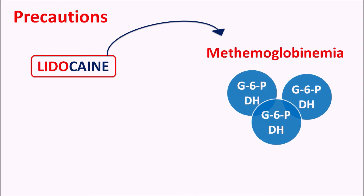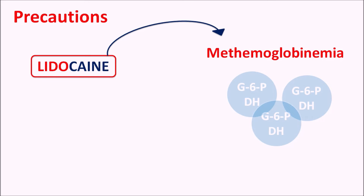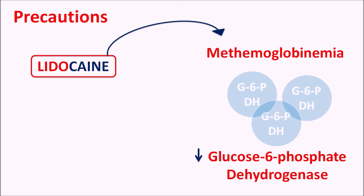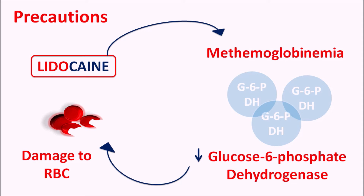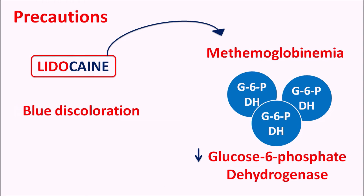Similarly, this drug can produce methemoglobinemia — particularly in patients who have glucose-6-phosphate dehydrogenase (G6PD) deficiency. G6PD is an important enzyme required for production of NADPH. NADPH activates the glutathione system so that it can reduce oxidative stress. In patients with decreased levels of G6PD, oxidative stress is increased resulting in destruction of RBCs. This damage to RBCs results in decreased oxygen-carrying capacity, and symptoms such as blue discoloration, seizures, and arrhythmias can be produced. That's why this drug should be carefully given to patients who are at risk of methemoglobinemia.